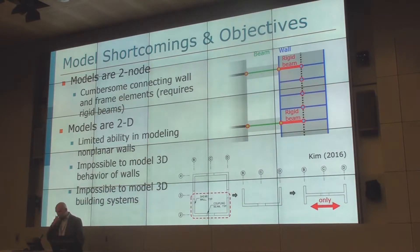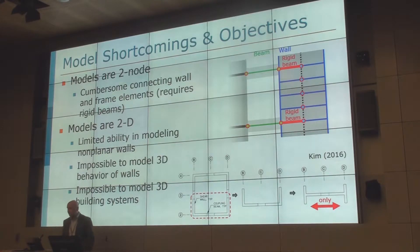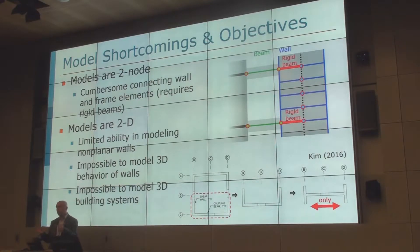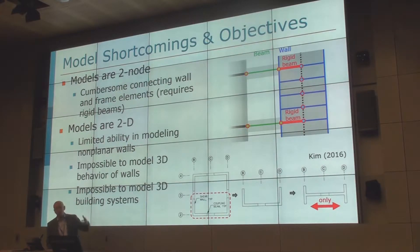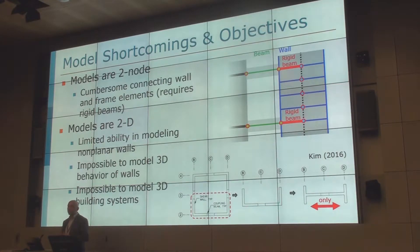Now, what are the shortcomings of these elements? First of all, they're just two-node elements — beam column elements. So if you're trying to model the connection between beams and the wall, it's very cumbersome because you have to add rigid beams in order to make that connection. It's a simple, trivial problem, but it's definitely there.